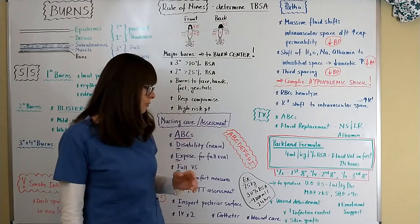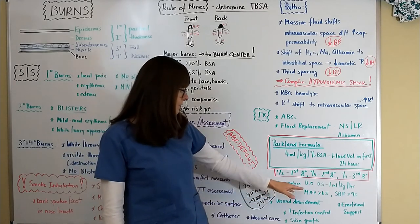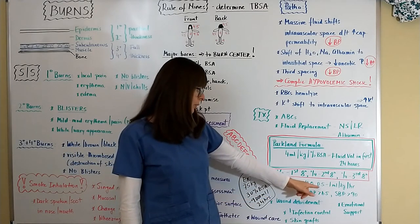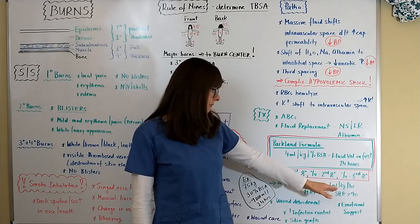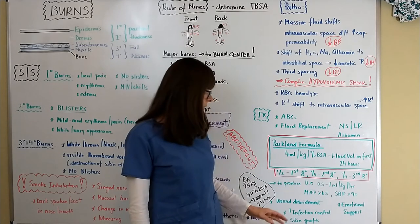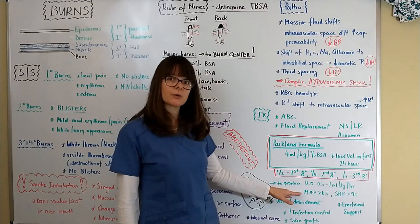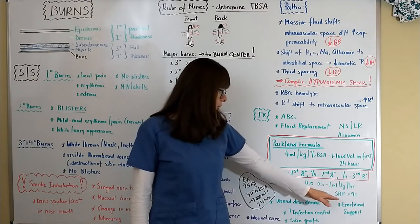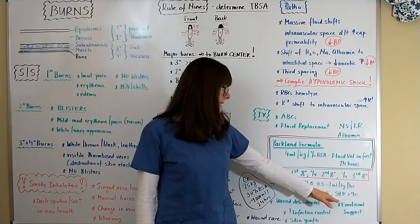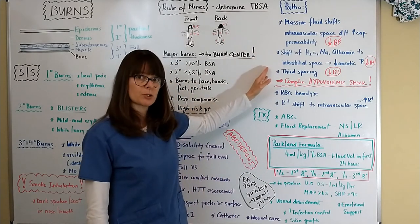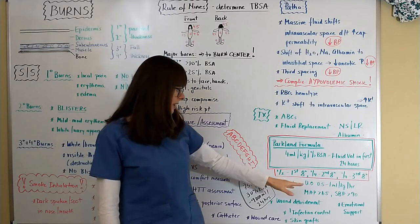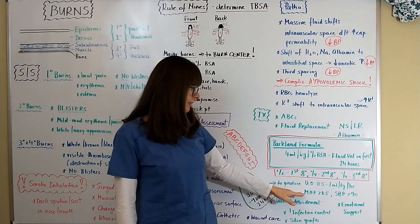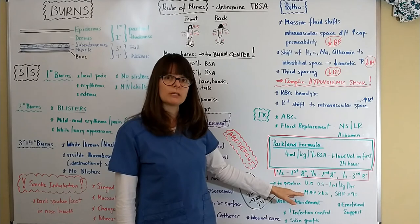That is really intended to produce a urine output of at least 0.5 to 1 milliliters of urine per kilo per hour, or titrated to a mean arterial pressure of 65, or systolic blood pressure greater than 90, because remember we're dealing with blood pressure problems here, and the sign that the patient is being perfused is their urine output or their MAP and their systolic blood pressure will meet these parameters.